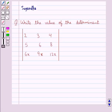Hello and welcome to the session. In this session we discuss the following question which says write the value of the determinant with elements 2, 3 and 4 in the first row, 5, 6 and 8 in the second row, 6x, 9x, 12x in the third row.